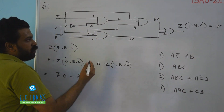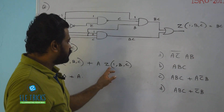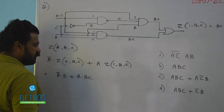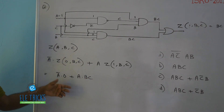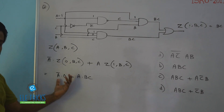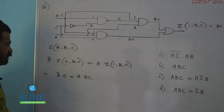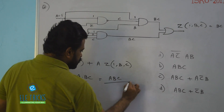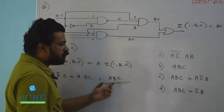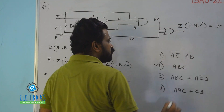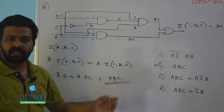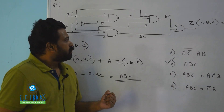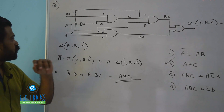So we have Z(1, b, c) = BC. The first term, A-bar AND 0, is 0. The second term is A AND BC. Therefore the final answer is Z = ABC. Option B is the correct answer.